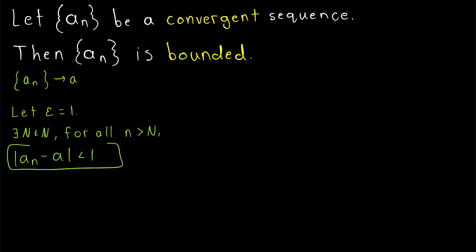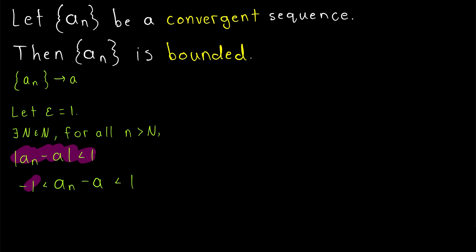This absolute value inequality is equivalent to writing that negative one is less than a_n minus a without the absolute value bars, which is less than positive one. I'll leave a link in the description to my lesson proving that this equivalence holds. It is a very important result that we use a lot.